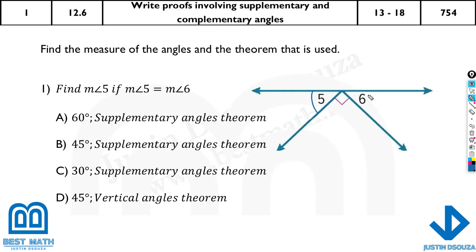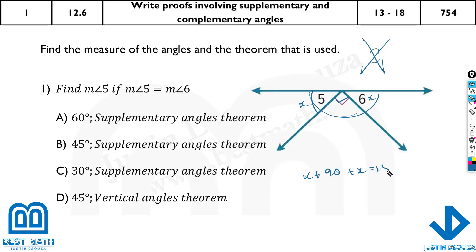So here when you look into this line, when you add up all of this, it must be 180. Supplementary Angle Theorem is used here. We can easily understand it's not vertical — vertical angles are opposite angles — it is the Supplementary Angle Theorem. The one known angle is 90, and these both are equal, so if I consider this as x and x, it's just going to be x plus 90 plus x, that is equal to 180 degrees.